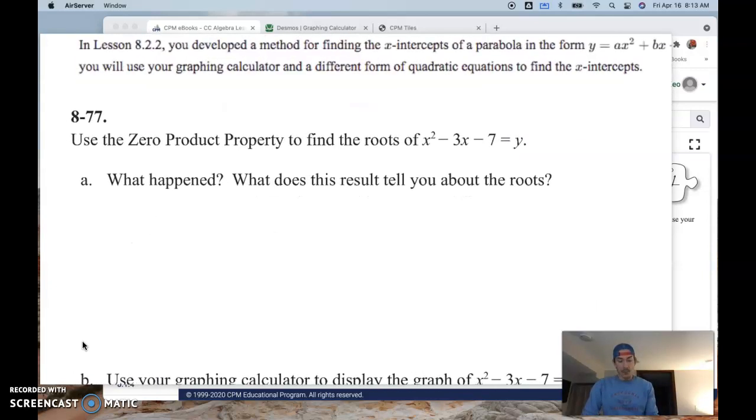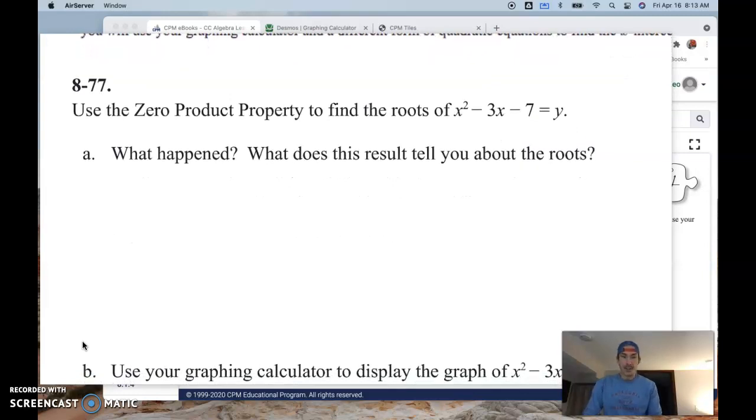So we start with a problem from the text, and this problem is 8-77, and it says use the zero product property to find the roots of this equation. y equals x squared minus 3x minus 7, and it asks me outright what happened. I would start by taking this thing and just simply setting it equal to 0 and trying to factor, because so far that is the only method that we have.